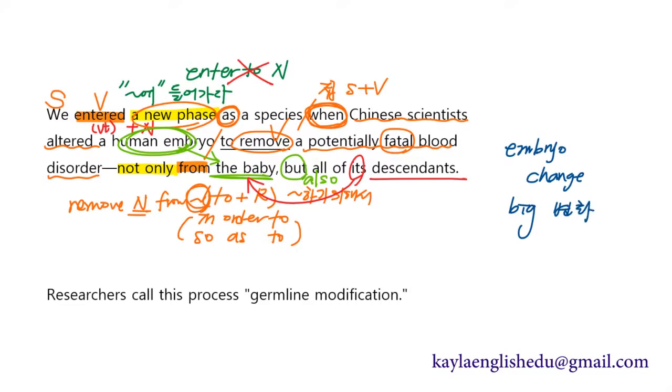Researchers call this process germline modification. 학자들은 부른다. call이라고 하는 동사는 call 명사 A 명사 B, A를 B라고 부르다 이렇게 쓰는 거예요. 이 과정을 germline modification이라고 부른다. germline은 생식기의, 생식과 관련된 변화, 변형이라고 부른다.